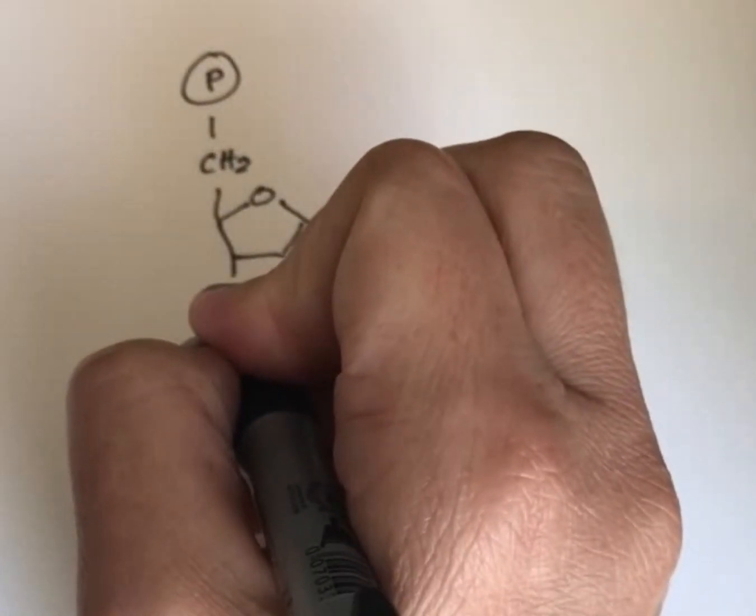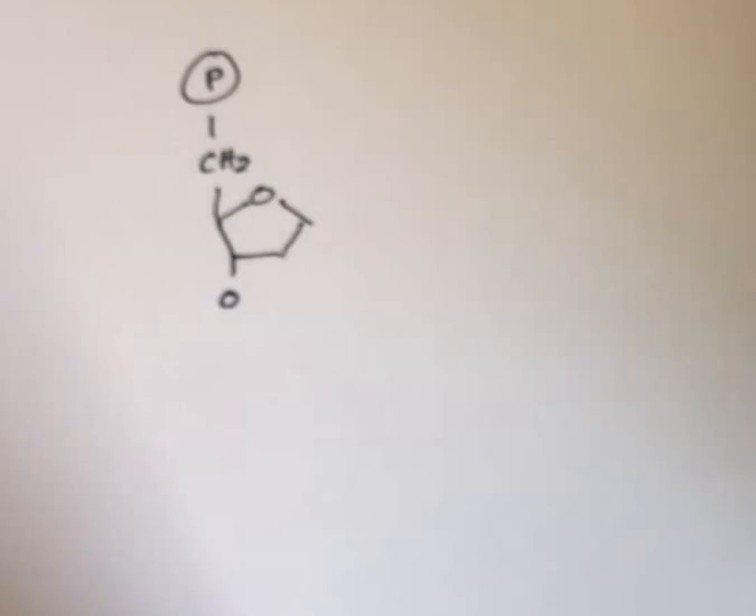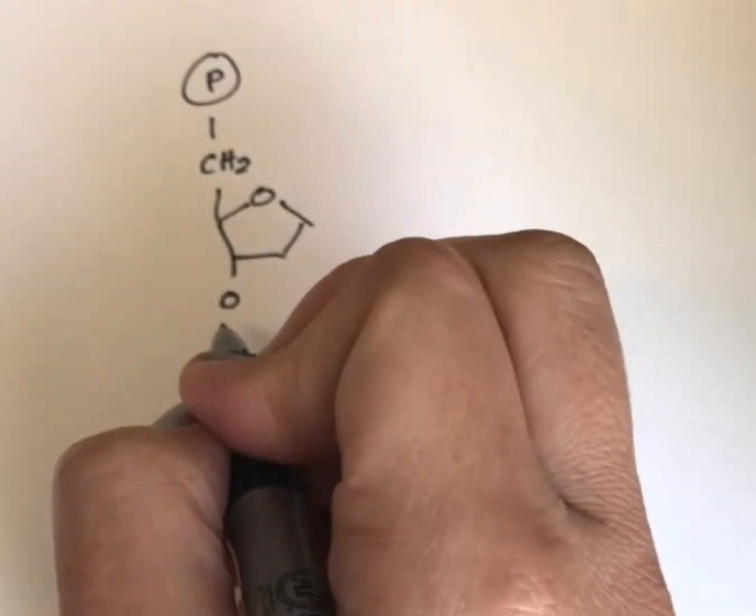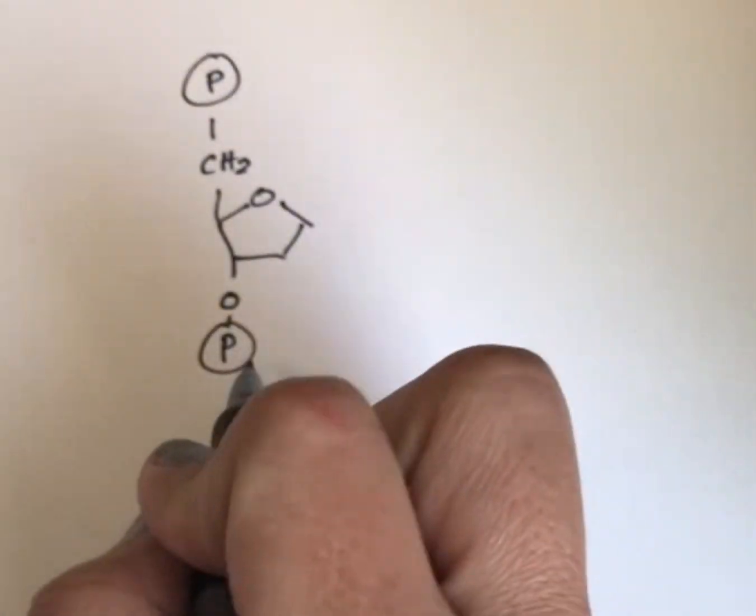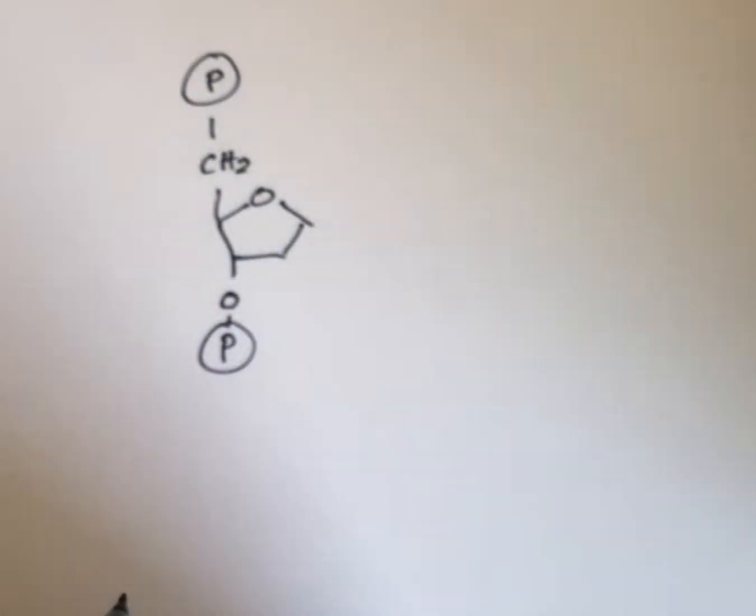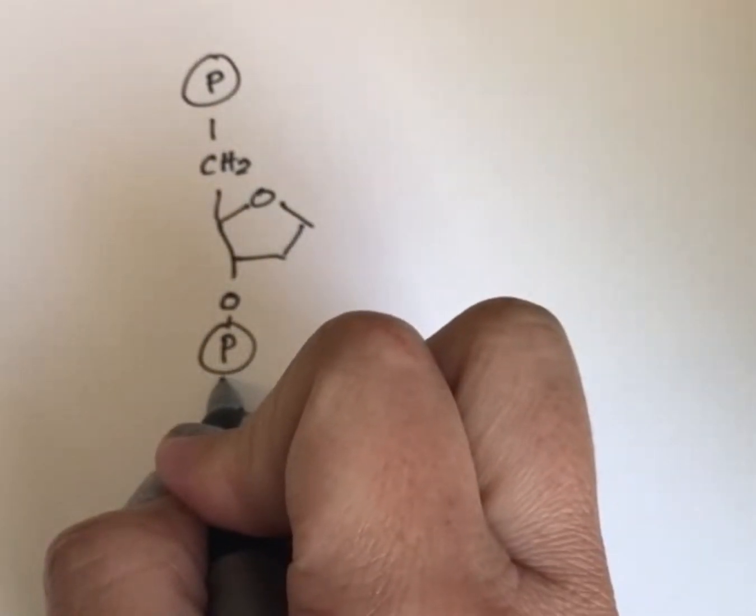This sugar is also going to have an OH group here, and this OH group is going to participate in bonding with the phosphate group of the next nucleotide in line. So I'm going to draw the full phosphate group here, even though one of the oxygens from the phosphate group is already drawn out there. This is just how I draw it.